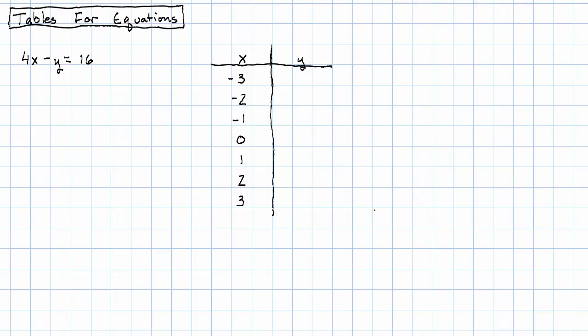We could work this out each time by hand. So I plug in x equals negative 3, so I have negative 12 minus y is 16, add 12 to both sides, I have negative y equals 28, multiply both sides by negative 1. And we get y is negative 28.